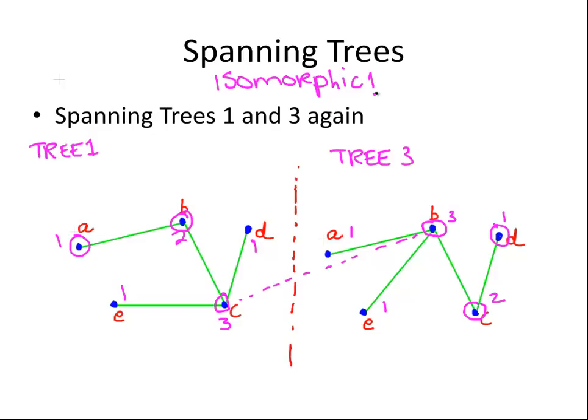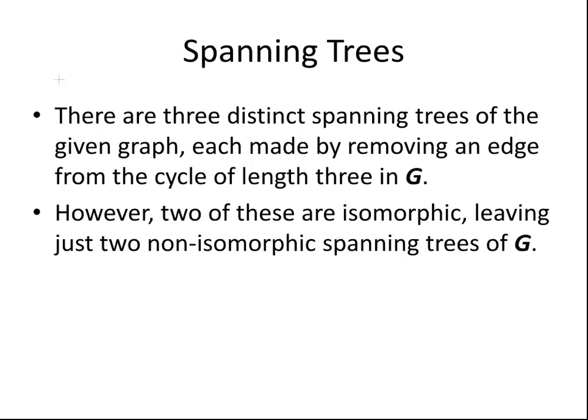We've only got two non-isomorphic spanning trees of G. There are three distinct spanning trees of the given graph, each made possible by removing an edge from the cycle of length three in G. However, two of these are isomorphic, leaving just two non-isomorphic spanning trees of G. And that is our presentation — thank you.